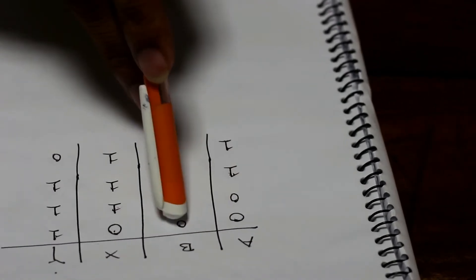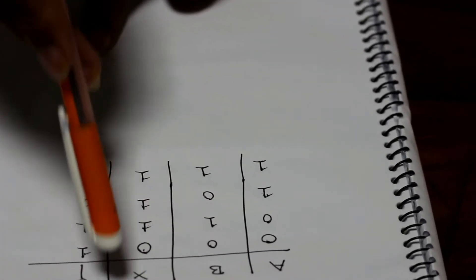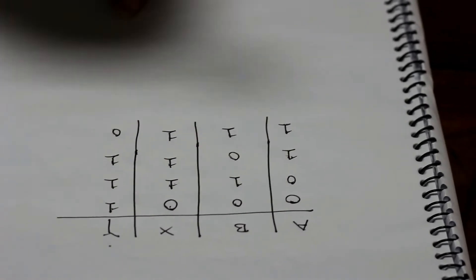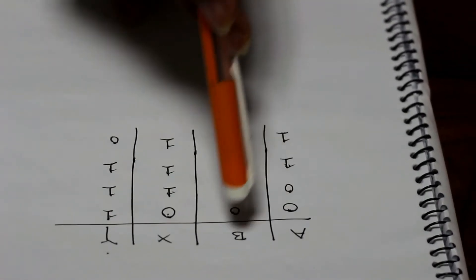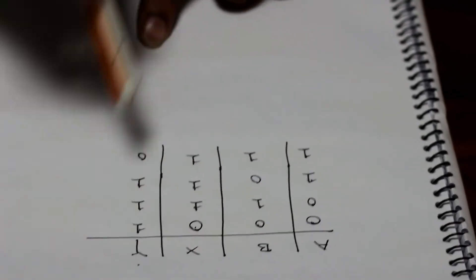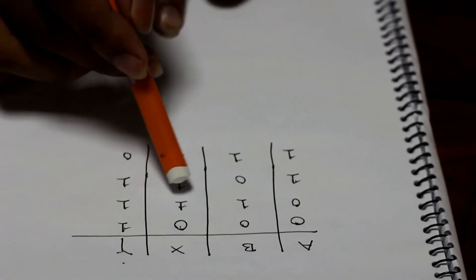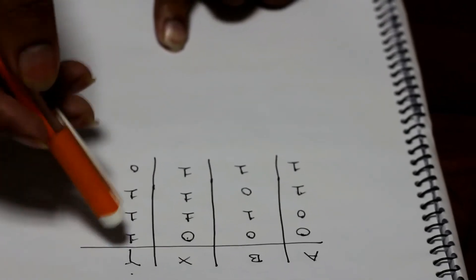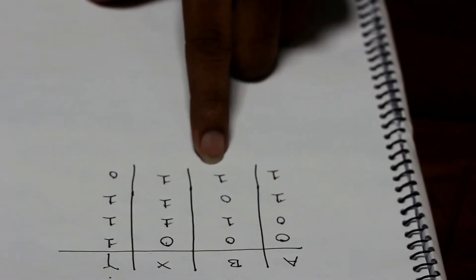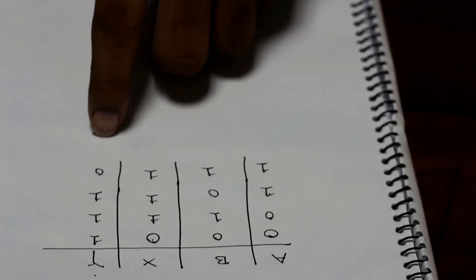When we are getting 0 in both A and B as input, we get 0 as output in X and 1 as output in Y. When we get 0 in A and 1 in B, we get output 1 for X and 1 for Y. When we get 1 in A and 0 in B, we get 1 for X and 1 for Y. When we get 1 in both A and B, we get 1 for X and 0 for Y.